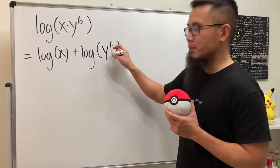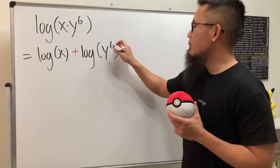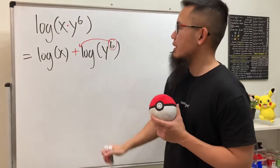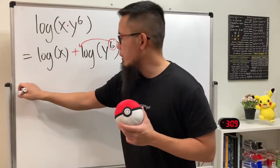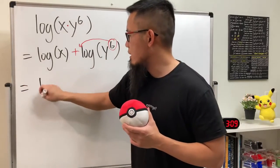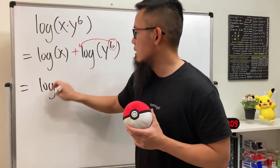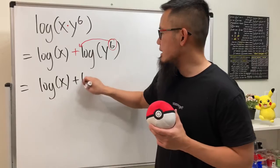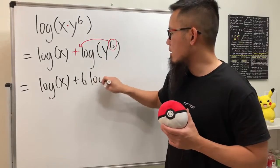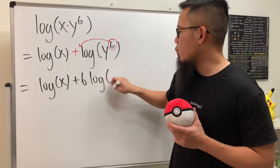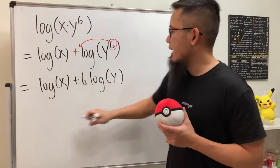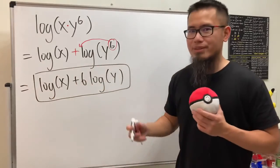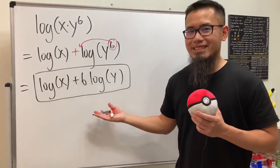But we are not done yet, because when we have y to the sixth power, we can bring the power to the front. So we end up with log of x plus 6 log of y, and this right here will do it.